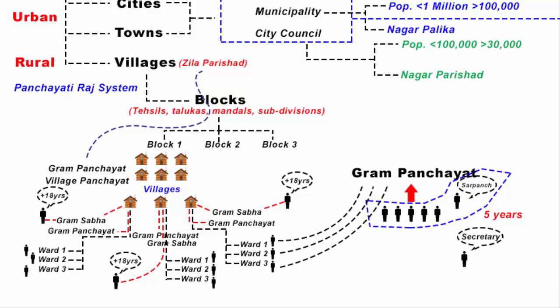The Gram Panchayat also has a secretary, who is also the secretary of the Gram Sabha. This secretary is not an elected person — he or she is appointed by the state government. The Gram secretary is responsible for calling meetings of the Gram Sabha and Gram Panchayat, and they also keep a record of the proceedings.